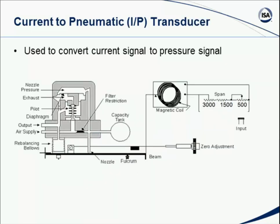Earlier we talked about a pneumatic transmitter — a device that takes a pressure measurement and generates a 3 to 15 PSI air signal out. Sometimes we need to go both ways: converting electrical signals to pressure signals and vice versa. For a device that puts out an electrical signal, such as a controller that needs to drive an air-operated valve, we have devices called current-to-pneumatic, or I-to-P transducers. These take a 4 to 20 milliamp signal in and put out a 3 to 15 PSI signal. So earlier we looked at a device that took a pressure in and put out a 3 to 15 PSI signal; now we're looking at a device that takes an electrical 4 to 20 milliamp signal in and converts it to a 3 to 15 PSI output.